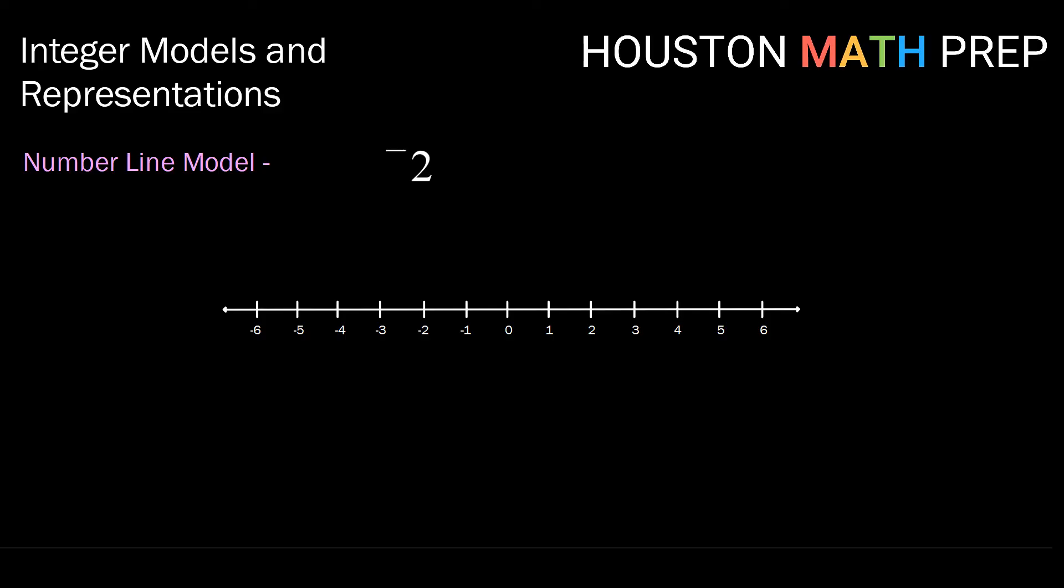What about negative 2? Again, finding 0, since this is a negative value, we're going to go 2 units from 0 to the left. So here is negative 2.